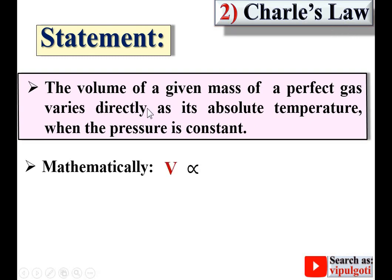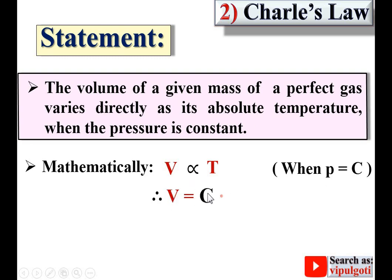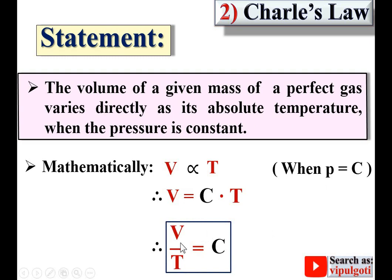Mathematically, volume varies directly as its absolute temperature when pressure is constant. If we introduce a proportionality constant, V equals constant times T. Therefore V divided by T equals constant. This is a very important mathematical statement of Charles' law — the ratio of volume to absolute temperature is always constant for every state when pressure is constant.